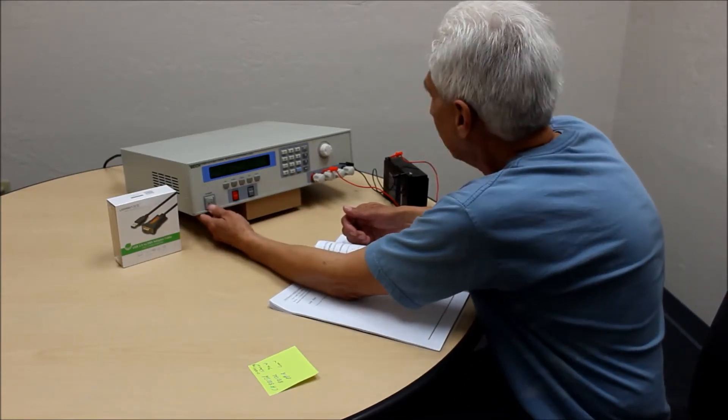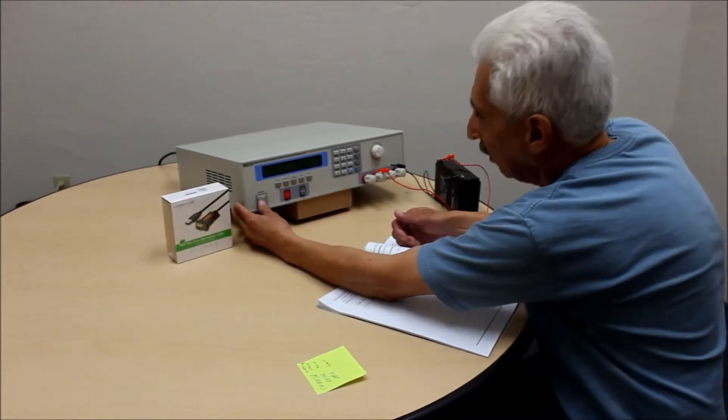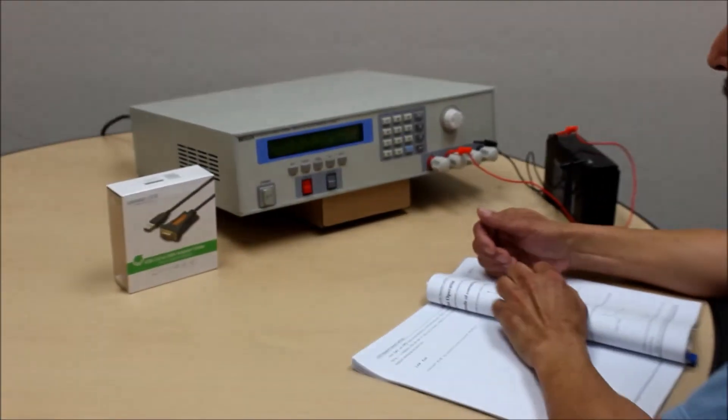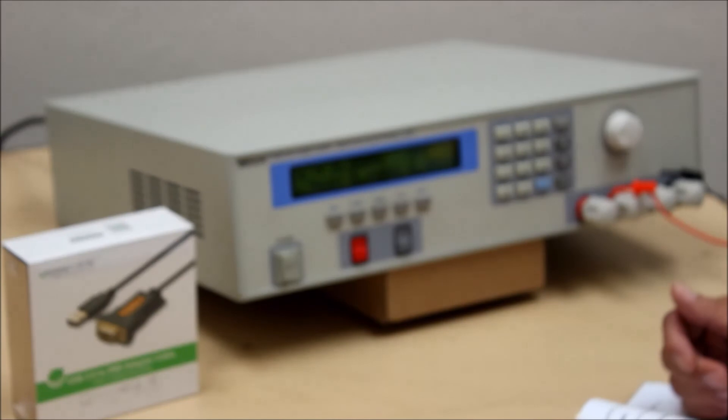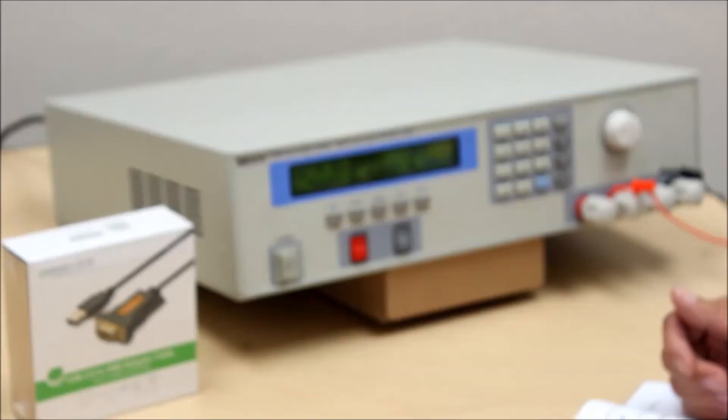So to go through a couple of settings of this unit, we first power up, it goes through its initialization and double checks all the circuitry inside and it comes up in the constant current mode setting which is pretty much the most useful of all the applications.